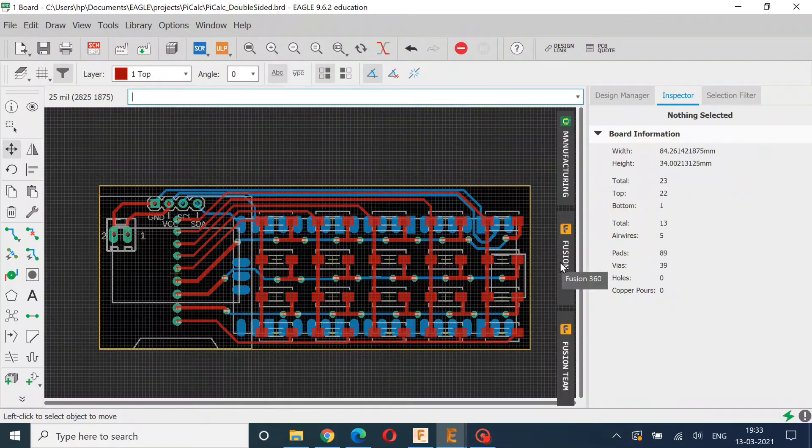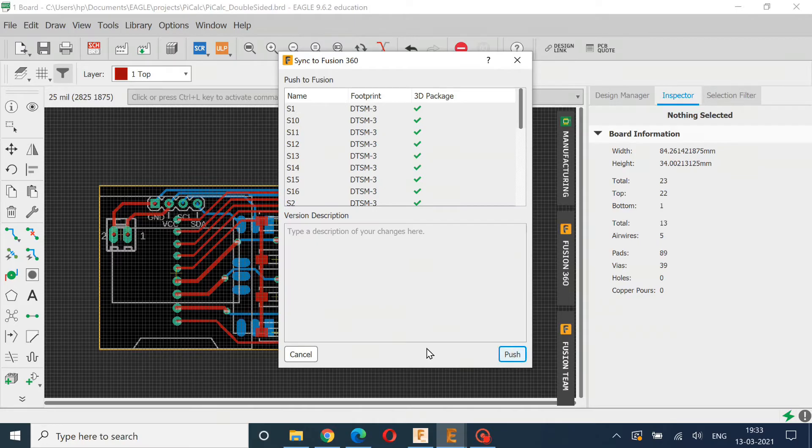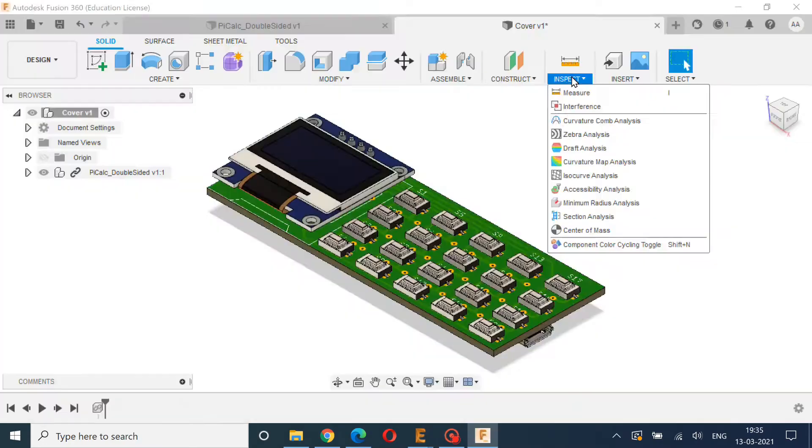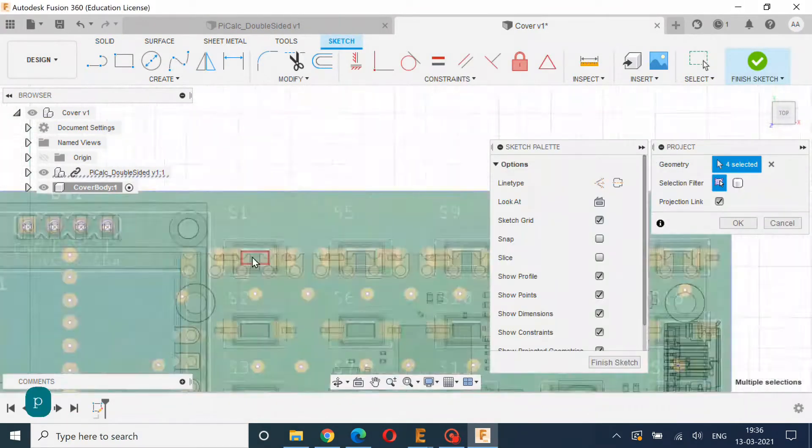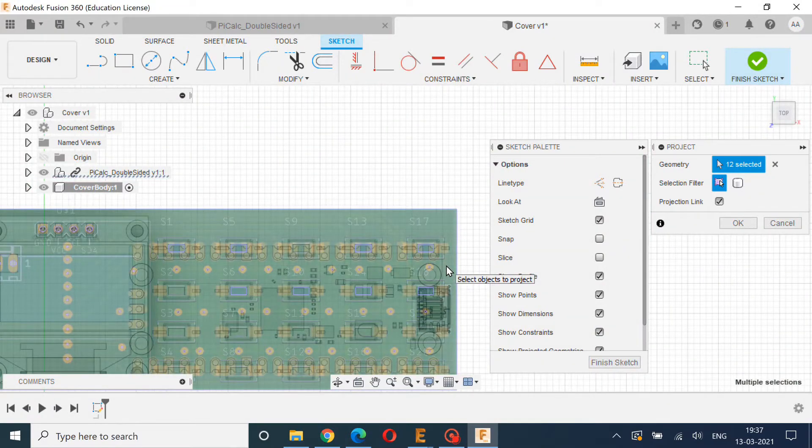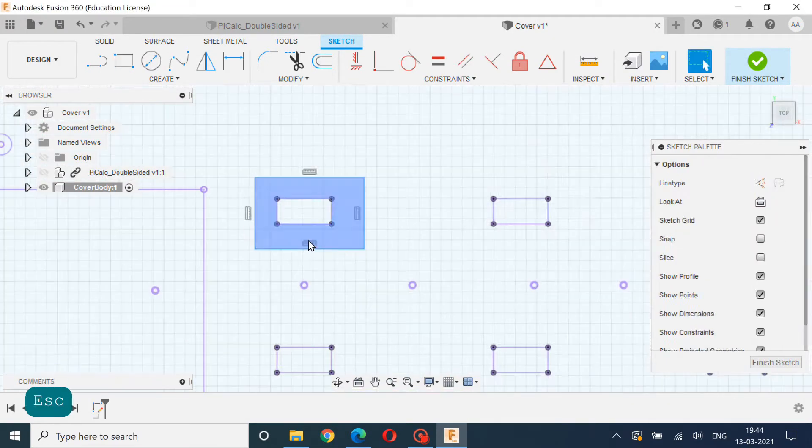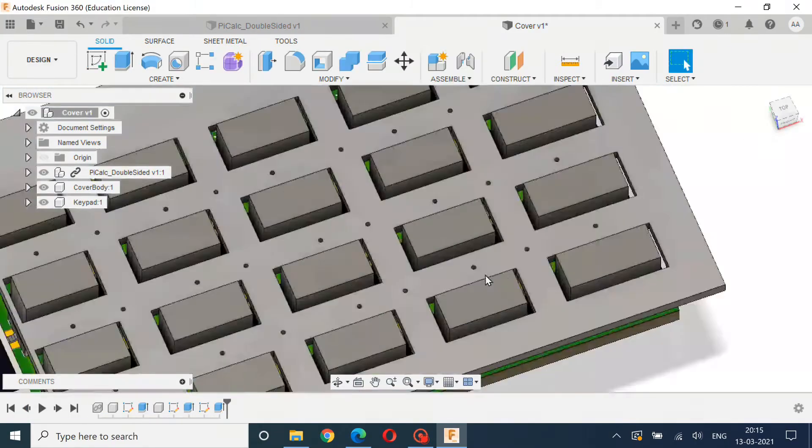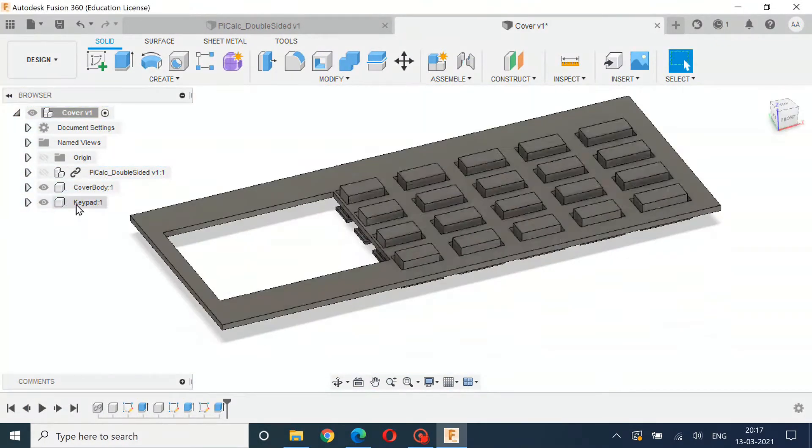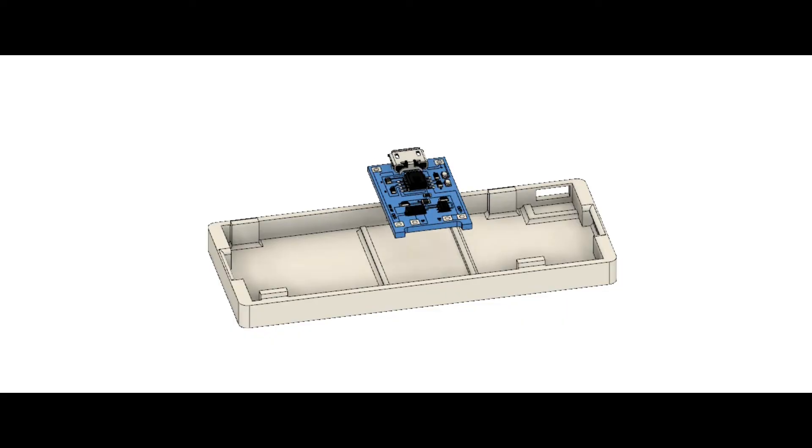Before seeing the features, let's create a case for our Pi Calc. As the PCB is designed in EagleCAD, I will be using Fusion 360 sync feature of EagleCAD to transfer the 3D files of PCB to Fusion 360 software. Thereafter I will create an enclosure around that and send it for 3D printing.